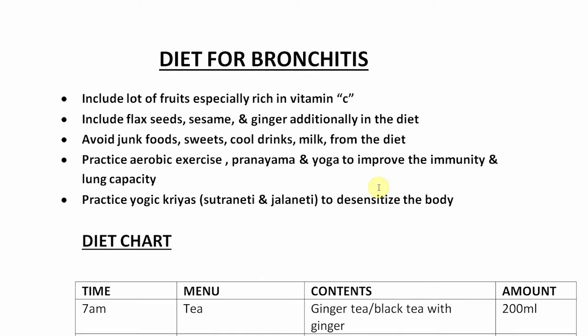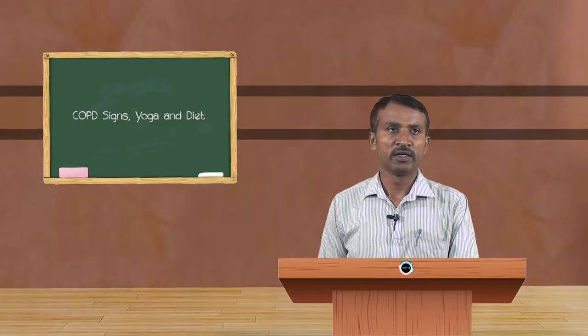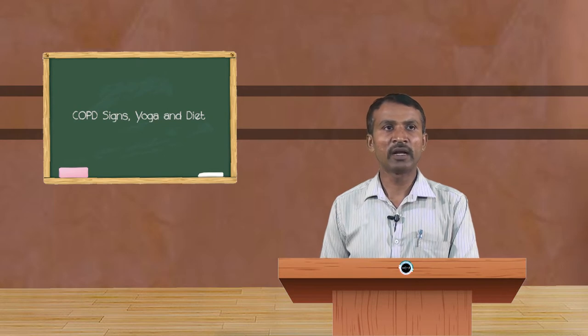The important diet for bronchitis or COPD includes lots of fruits, especially those rich in vitamin C. Include flax seeds, sesame, and ginger additionally in the diet. Avoid junk foods, sweets, cold drinks, and milk — including fast foods and foods made with artificial sweeteners and sugar. Practice aerobic exercises, pranayama — that means deep and shallow breathing — and yogic postures. These all improve the immunity of an individual and lung capacity.